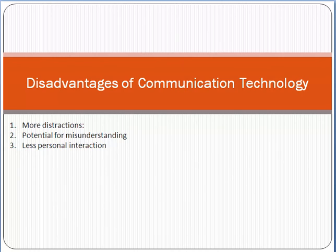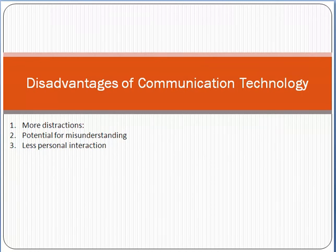Personal interaction is also reduced. Nowadays people have become very habitual about using mobile phones, tablets, internet, and laptops. As a result, physical interaction — sitting with someone, spending time with them in person — has become reduced, because people prefer to use Facebook, LinkedIn, and other tools instead.